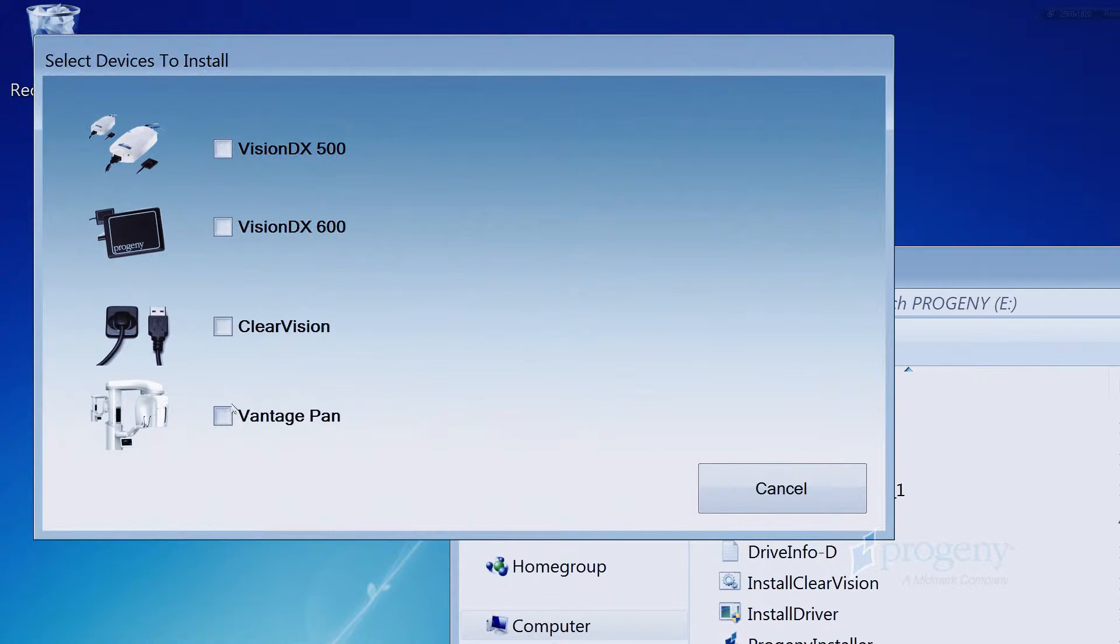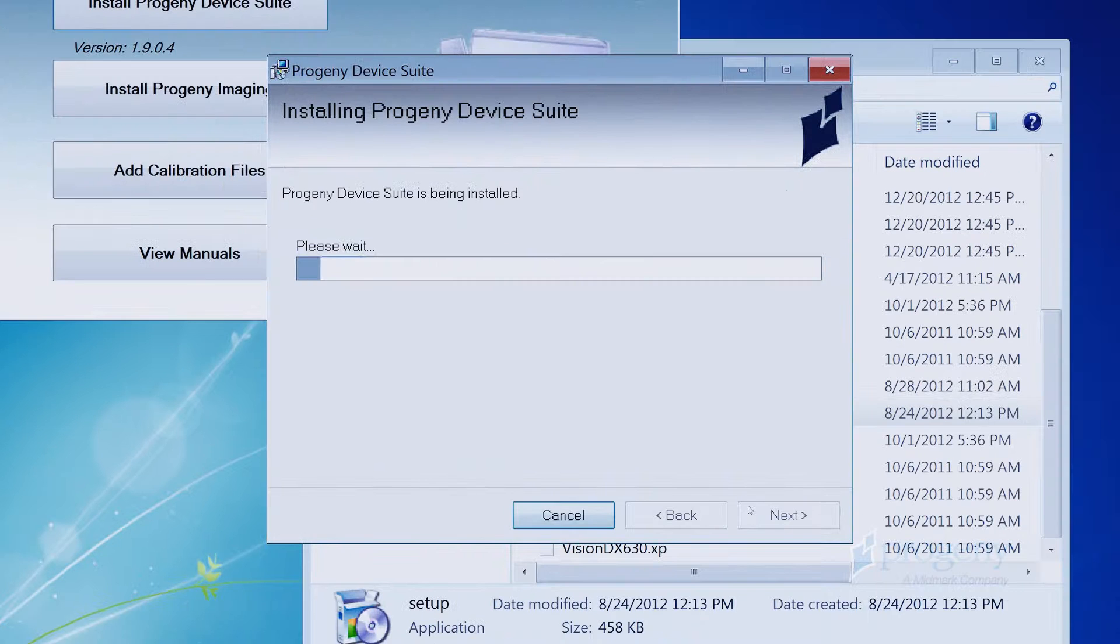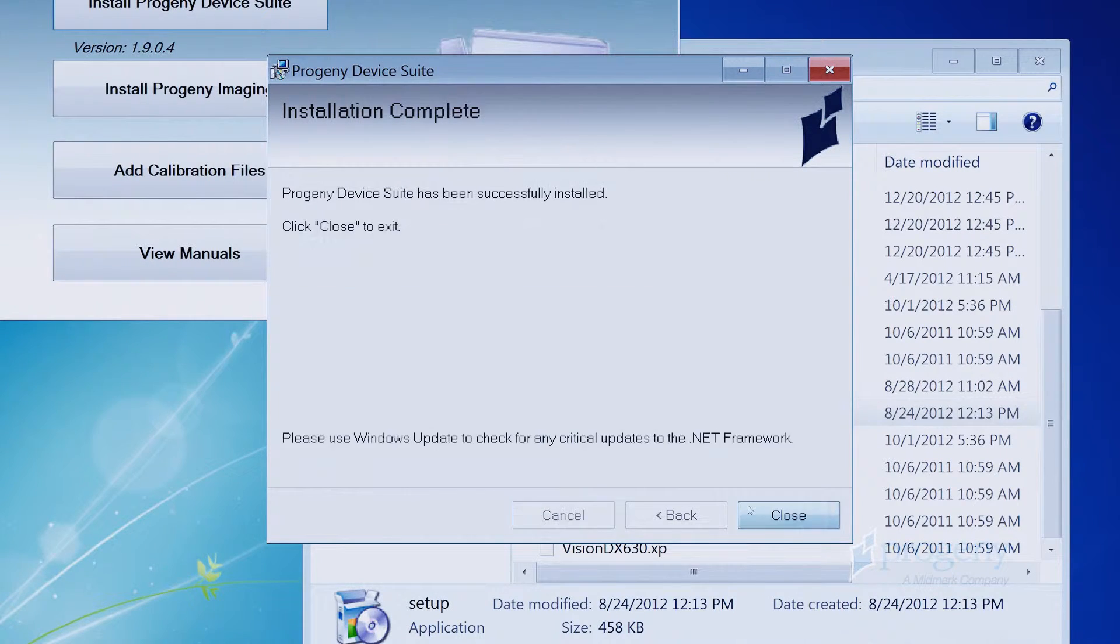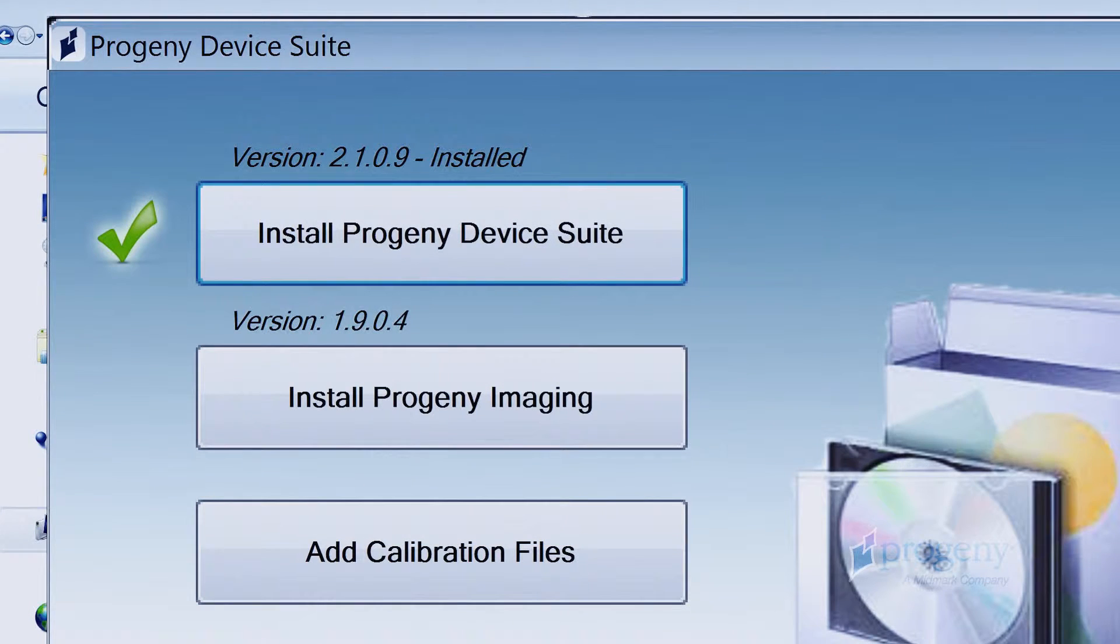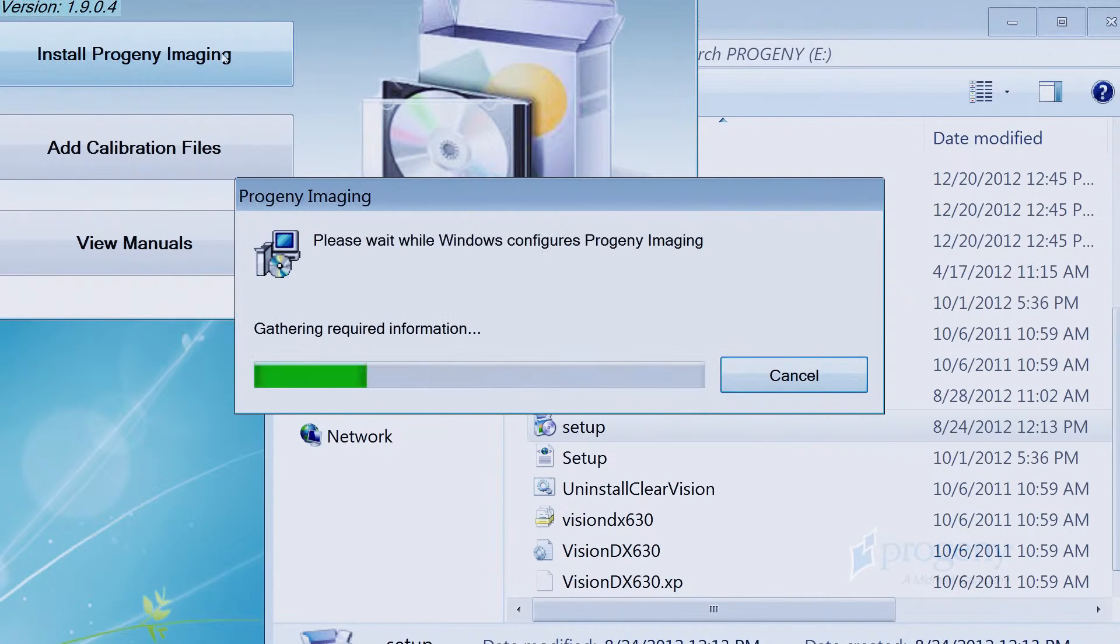Click on the Install Progeny Device Suite button. Choose Vantage Pan checkbox. Once Progeny Device Suite installation is completed, continue by clicking on the Install Progeny Imaging button and follow the installation prompts.